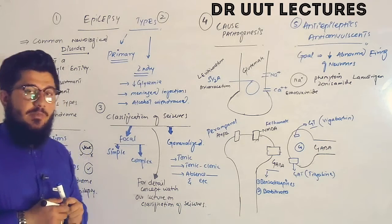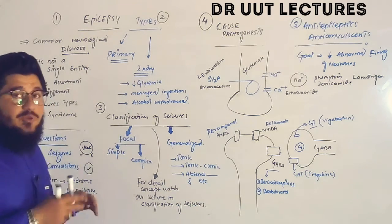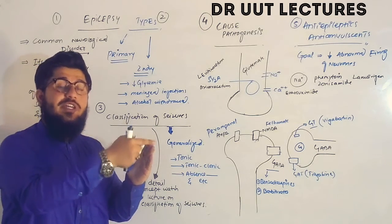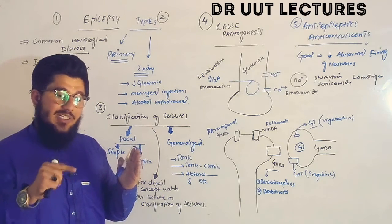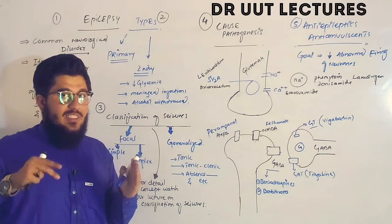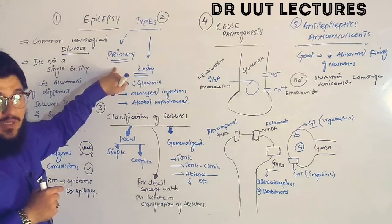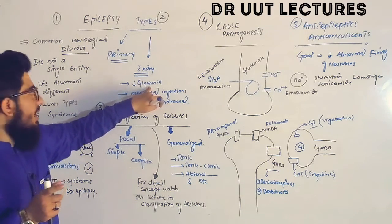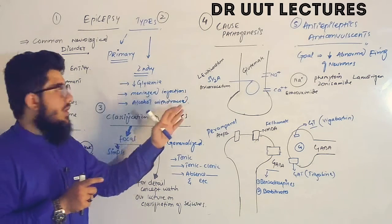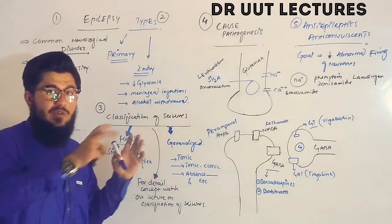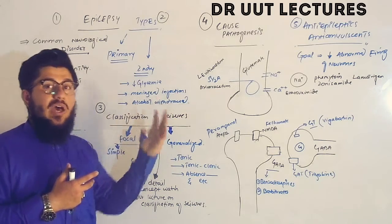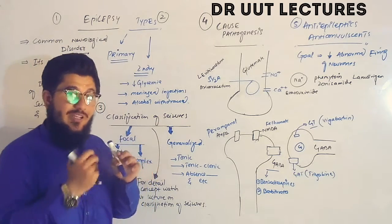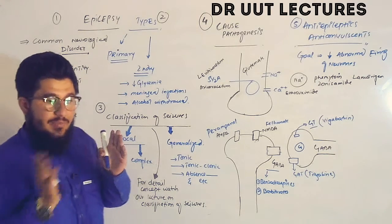There are two types of epilepsy: primary and secondary. A patient with no underlying disease but who still develops epilepsy has primary epilepsy. A patient whose epileptic attacks arise from an underlying condition — such as hypoglycemia, meningitis, or alcohol withdrawal — has secondary epilepsy, because it is secondary to a disease.